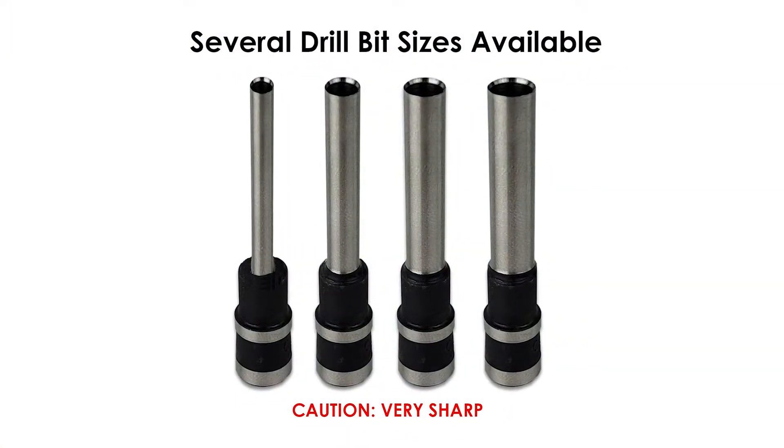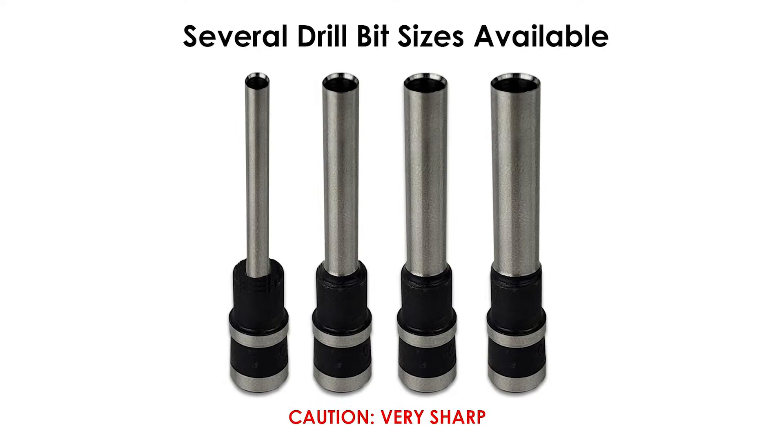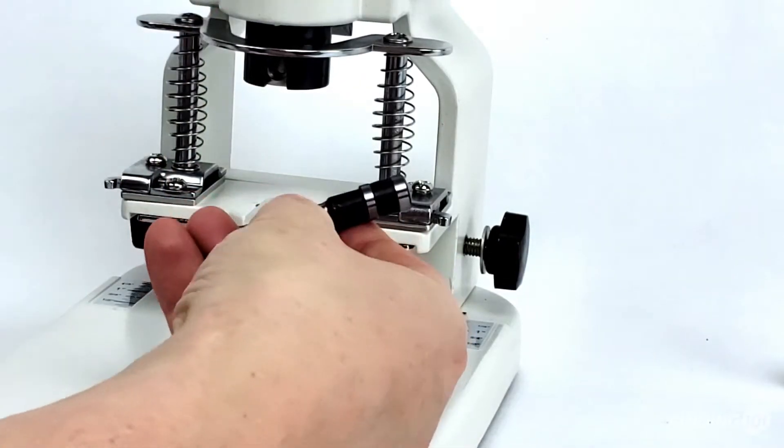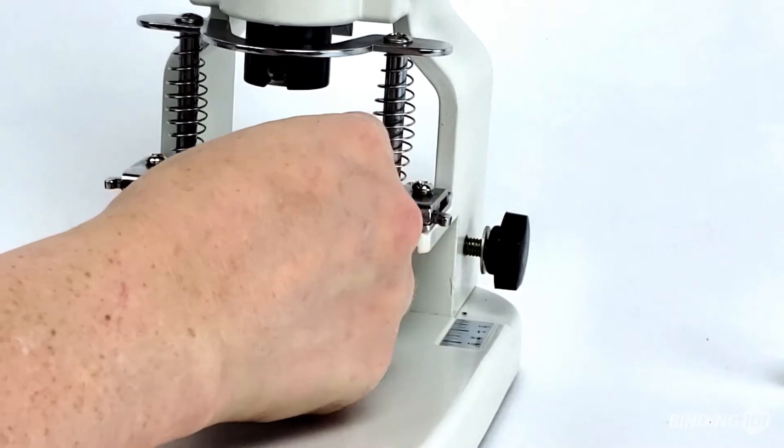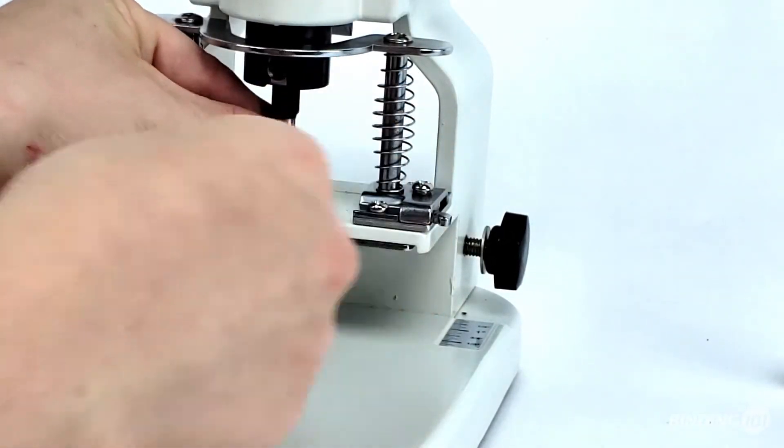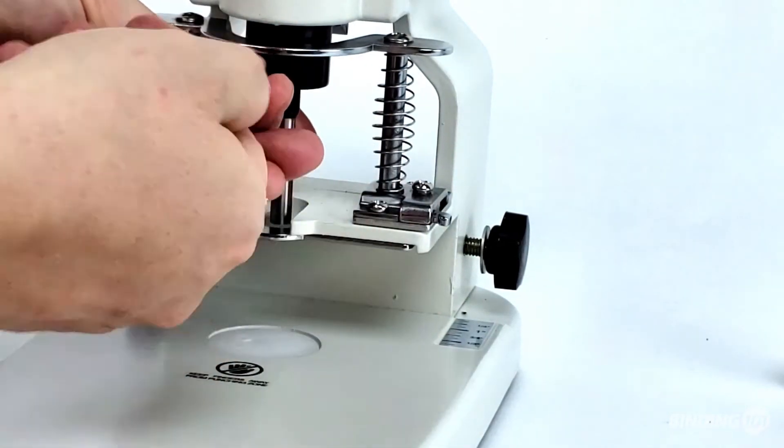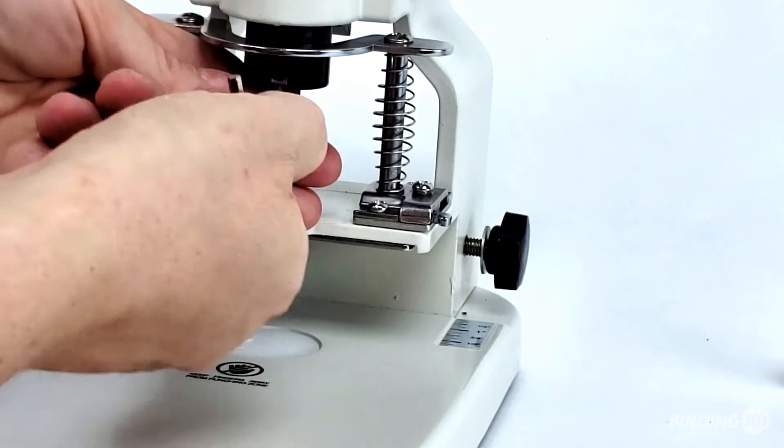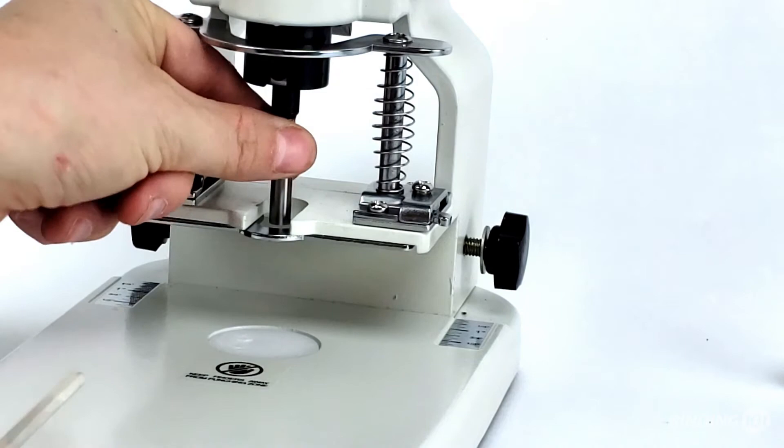Now let's install the drill bit. Always be careful handling drill bits as they are much sharper than they appear. Place the drill bit with the sharp end down through the clamp and then up into the bit holder. Once it cannot go up any higher, use the included Allen wrench which you can find in the waste bin on the back of the machine to tighten the bit in place.